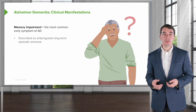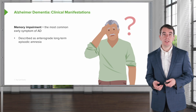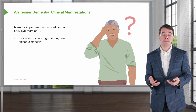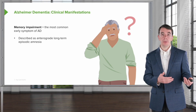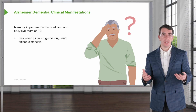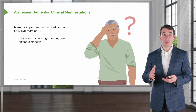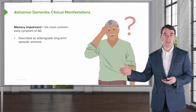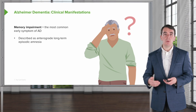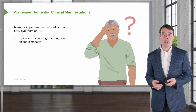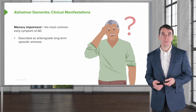It's described by patients as an anterograde long-term episodic amnesia. Patients can't remember what you just told them. They know who they are and they have all their long-term memories, but those new memories that they want to lay down are difficult to form.